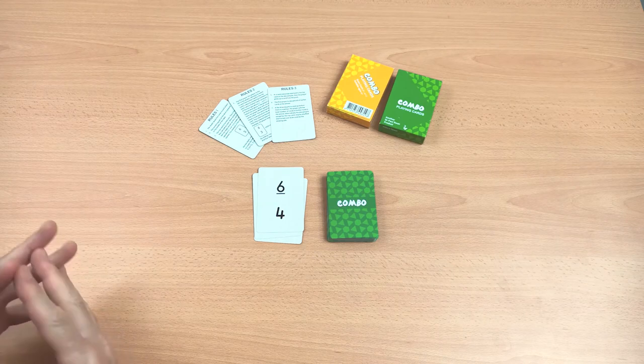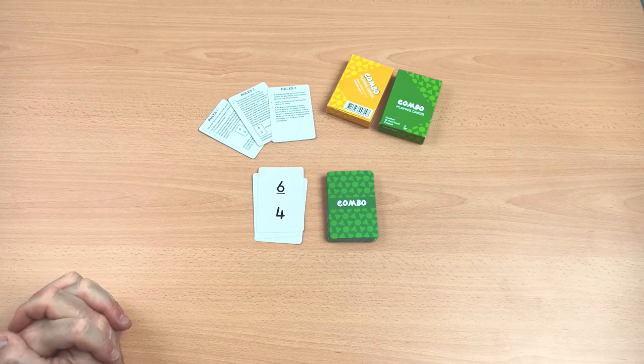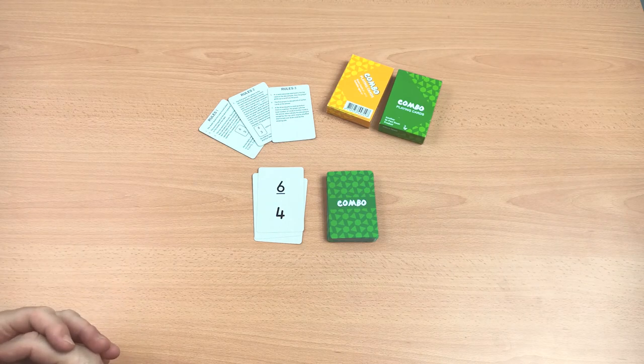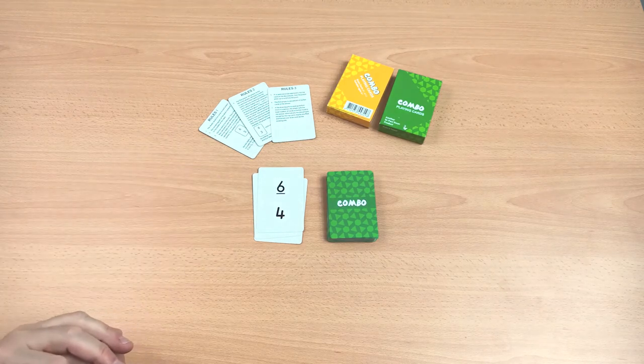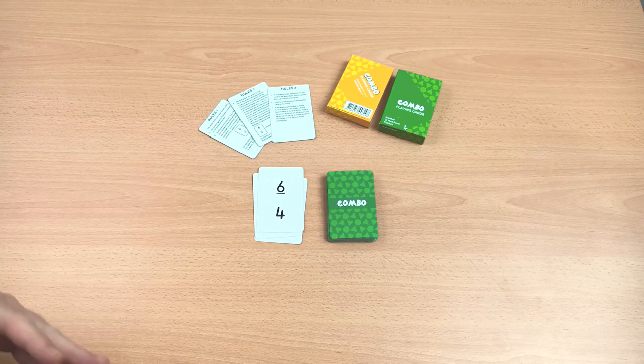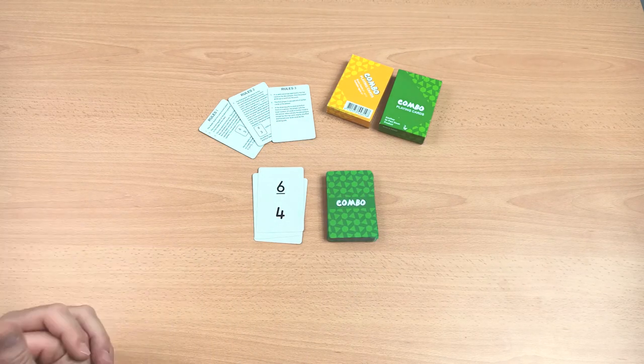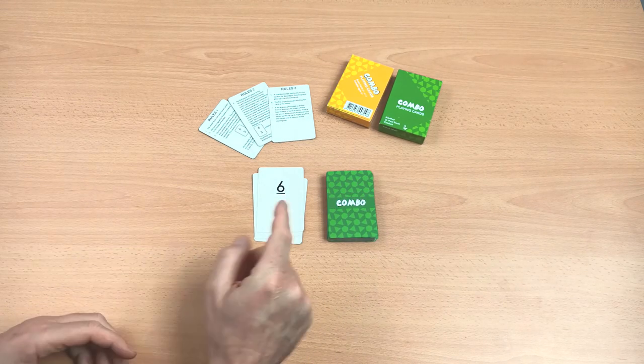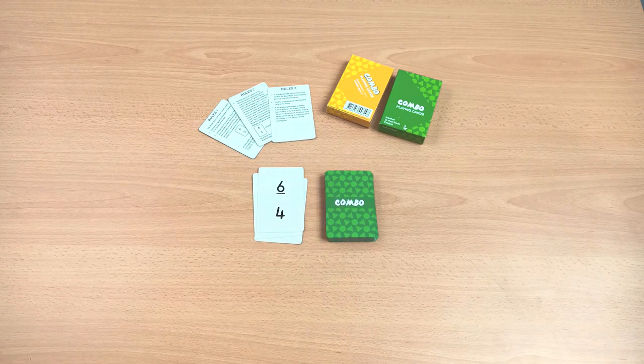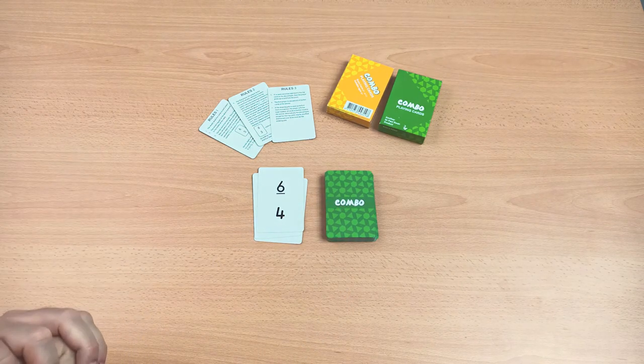But you don't do the division if it doesn't work out nicely. Now if you can't go, you pick up off the pack. The aim of the game is to get rid of all your cards. If you do pick up off the pack, that's the end of your turn and it goes to the next player.